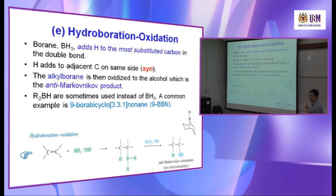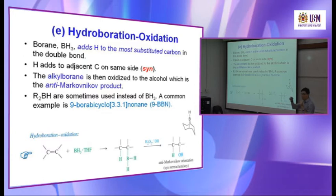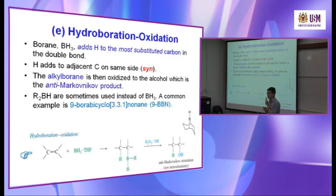You can also use R₂BH instead of BH₃ — R₂ means it's attached to two alkyl groups. One example given is 9-BBN, a very long name; you don't need to know the full name, just remember the acronym 9-BBN, which stands for 9-borabicyclo[3.3.1]nonane. You don't need to memorize the structure, just recognize the name. For the oxidation step, you need to use H₂O₂ and OH⁻.